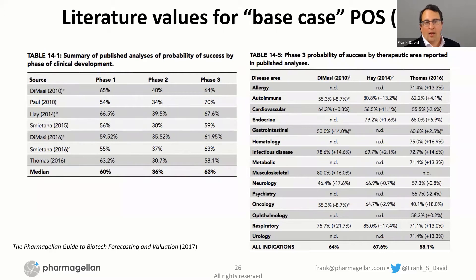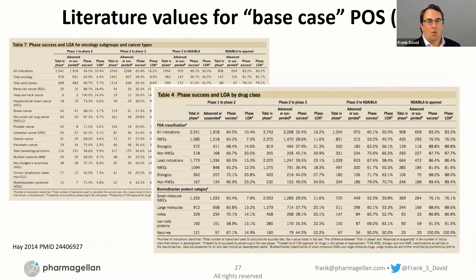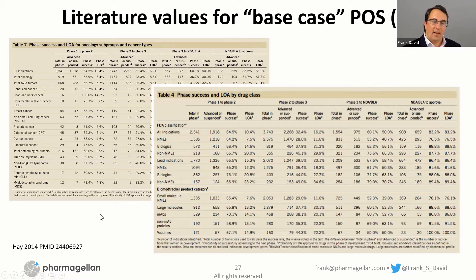And then on the next slide, you can go even further and look within a therapeutic area — on the left, at different subtypes of cancer from the Hay paper, and then on the right, looking at whether biologics, lead indication, small molecule, large molecule, and so on.